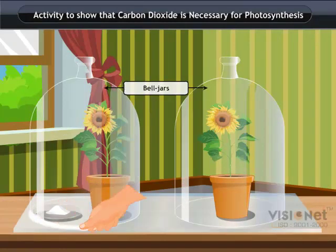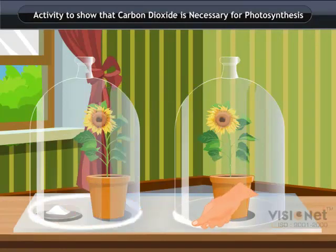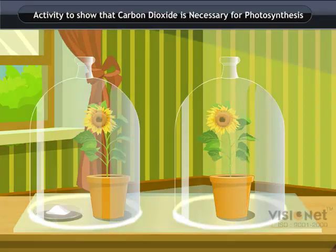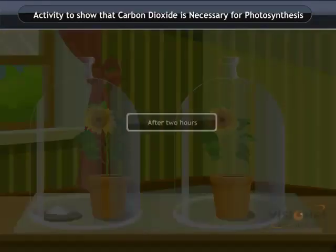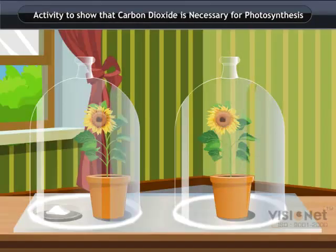Use Vaseline to seal the bottom of the jars to the glass plates so that the setup is airtight. Keep the plants in the sunlight for about two hours.